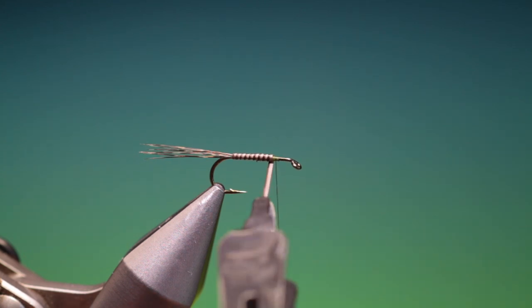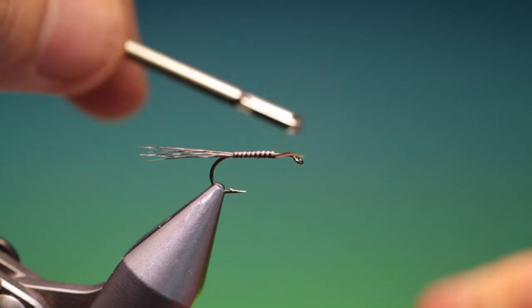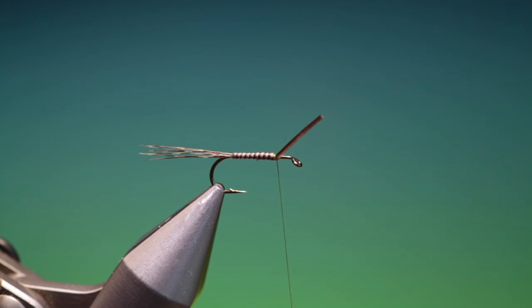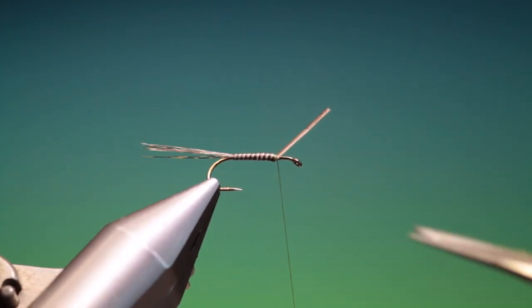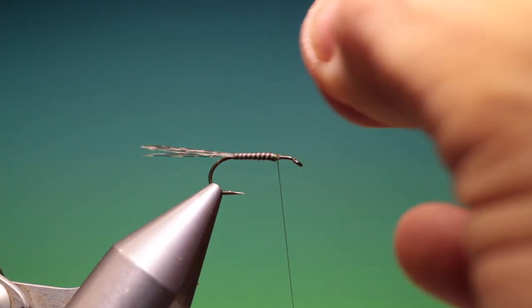And we swap our thread around the back. Lock that off. Two or three turns. Remove that.